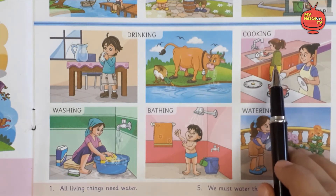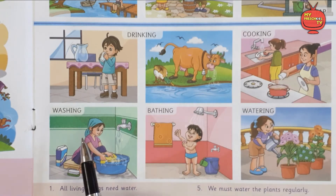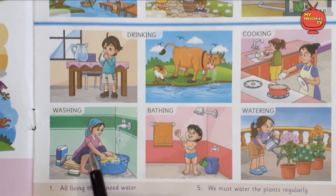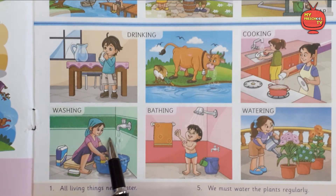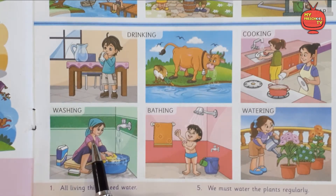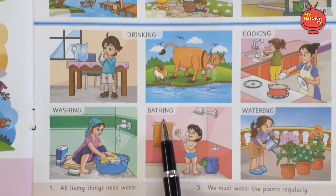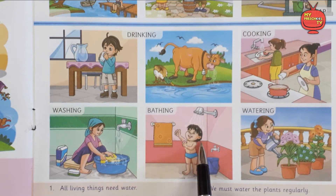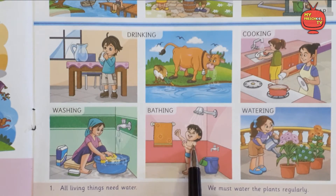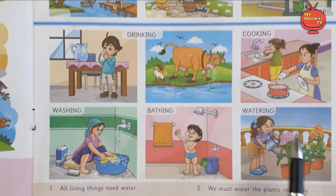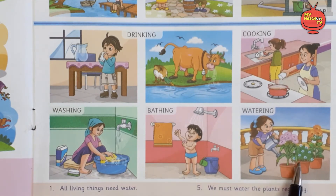Cooking — water is used for cooking food. Without water you cannot cook food. Washing — water is used for washing clothes, for washing your things, for cleaning your houses. We must take a bath daily, so water is used for bathing. Without water we cannot take a bath.